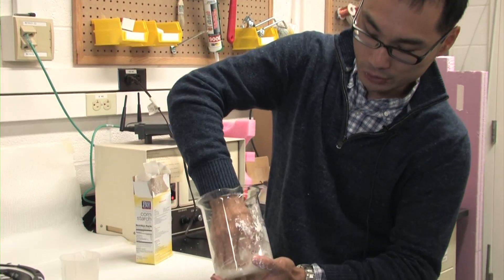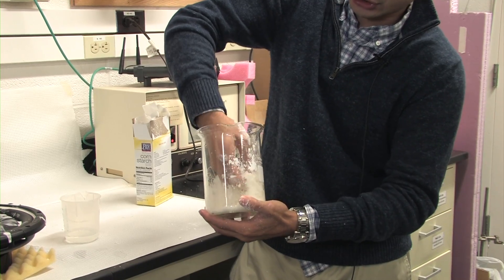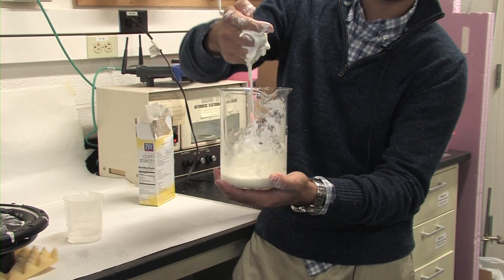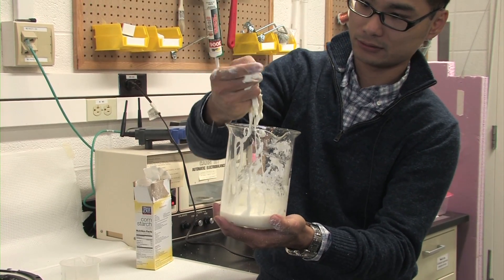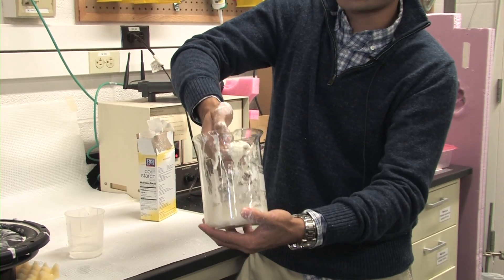But the thing is if you start to do some severe motion or you try to stir it really fast, it actually becomes like solid and it breaks. So you can really take out a chunk of cornstarch.